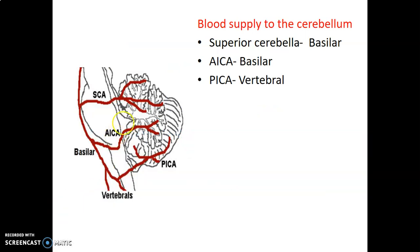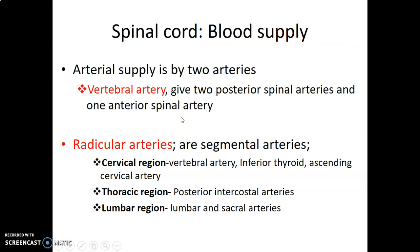Blood supply to the cerebellum is provided by three vessels. The superior cerebellar artery from the basilar artery supplies the superior aspect of the cerebellar hemispheres. Then you have the anterior inferior cerebellar artery from the basilar artery. And the posterior inferior cerebellar artery from the vertebral artery, which supplies the posterior inferior aspect of the cerebellar hemispheres.